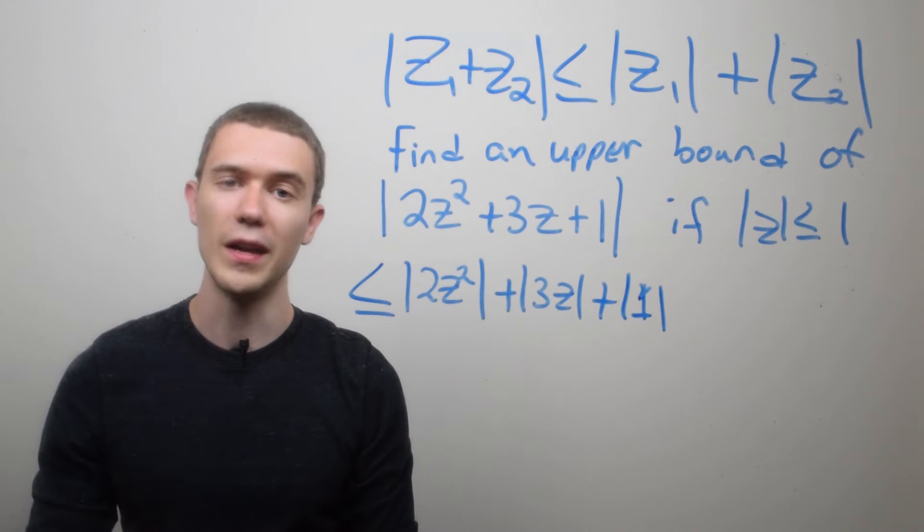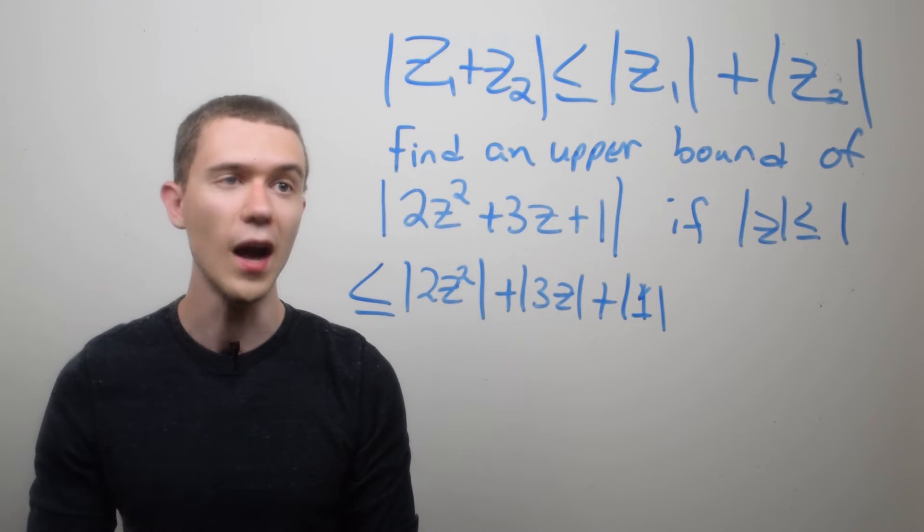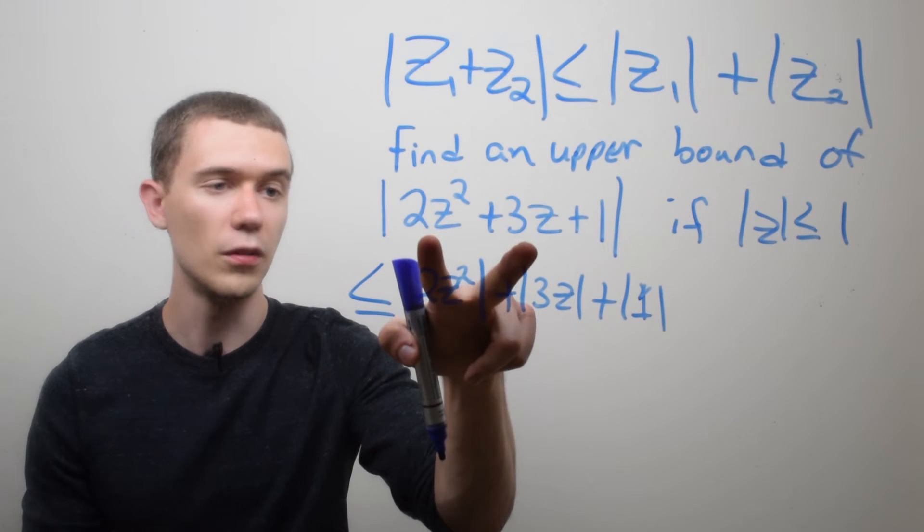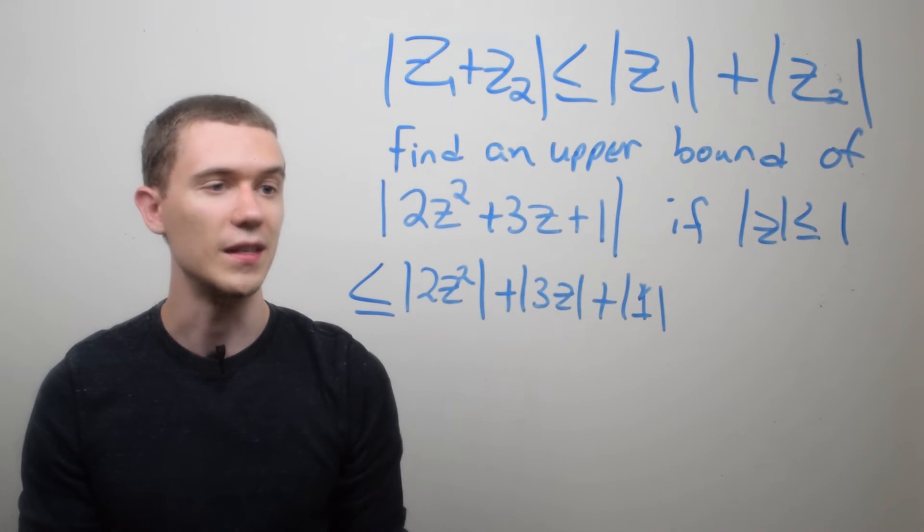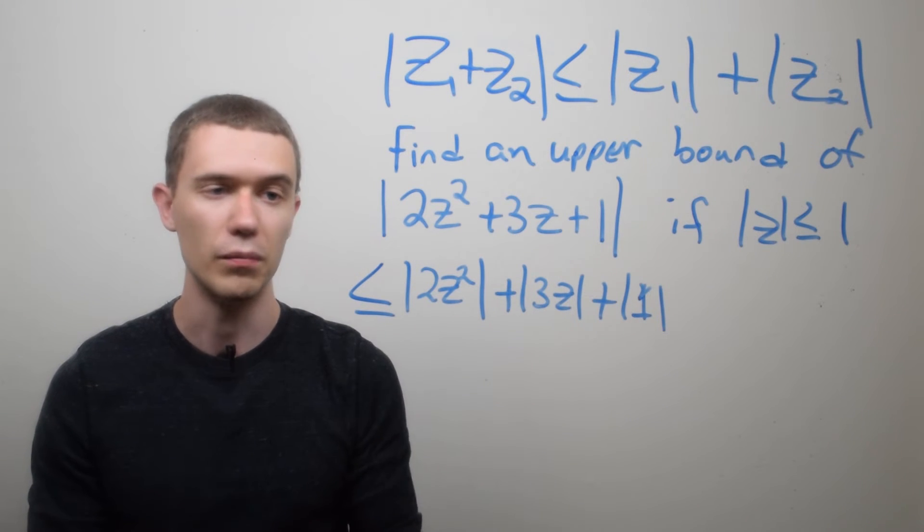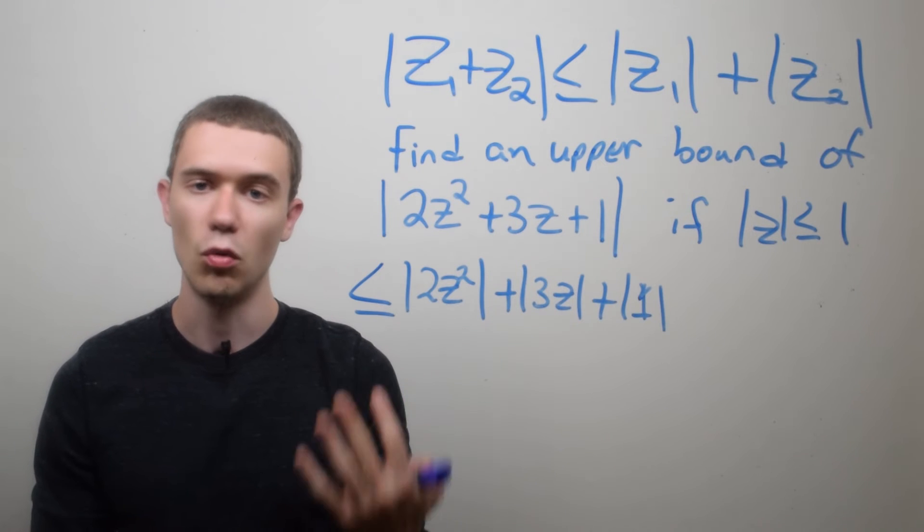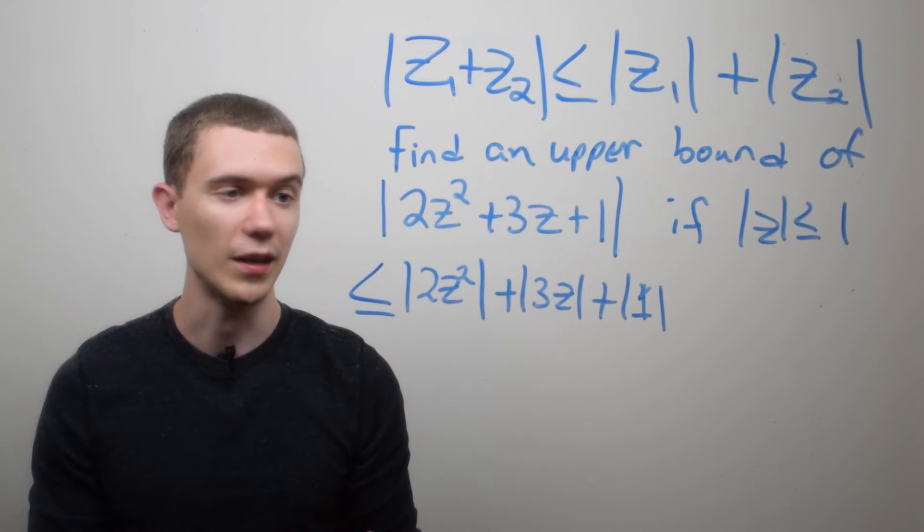And this is just an application of the triangle inequality two times. So you could think of it as the first two as my z1 and the second as my z2, and then splitting it one more time. But this here, this is just one triangle inequality application.